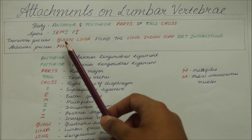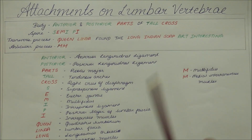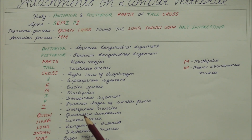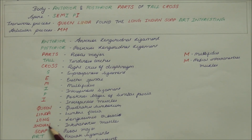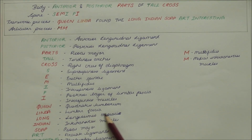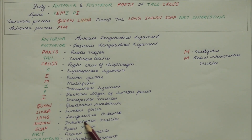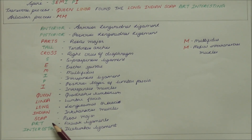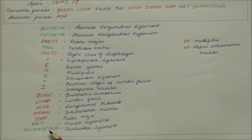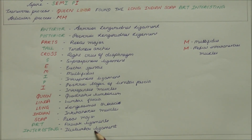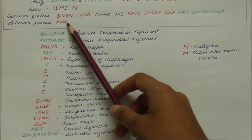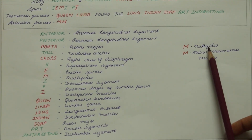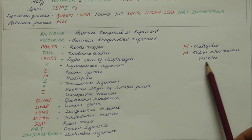For the transverse process mnemonic 'Queen Linda Found the Long Indian Sore Part Interesting': Queen = quadratus lumborum, Linda = lumbar fascia, Long = longissimus thoracis, Indian = intertransverse muscles, Soap = psoas major, Art = arcuate ligaments, Interesting = iliolumbar ligament. Finally, for the articular process mnemonic 'MM': the first M = multifidus origin, the second M = medial intertransverse muscles origin.